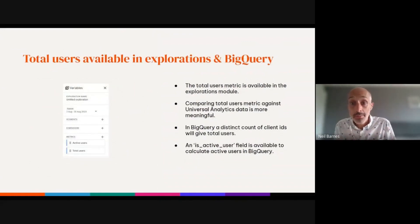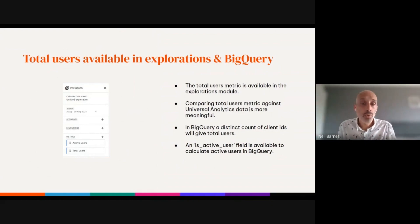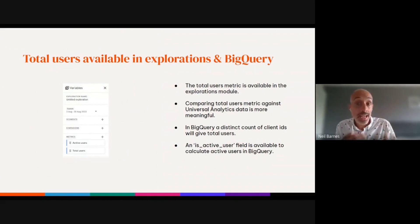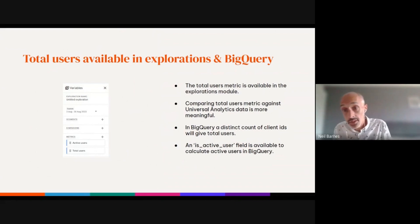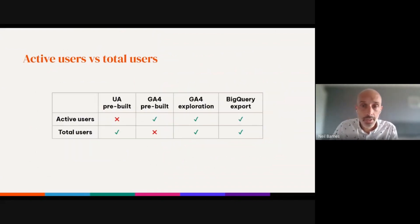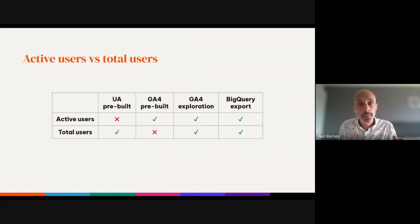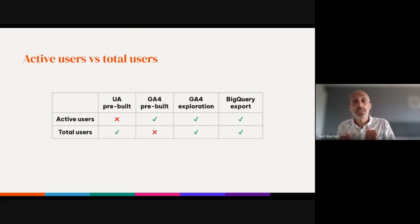Total users are available in Google Analytics 4 — it's just a case of knowing where to find them. Total users is available in the Explorations module as a separate metric to active users. Within the BigQuery raw data export, a distinct count of the user's pseudo-ID gives a calculation representing total users. So comparing total users in Google Analytics 4 against total users in Universal Analytics is a more meaningful comparison. In Universal Analytics there was no active users metric; GA4 pre-built reports have active but not total — but Explorations and BigQuery give the flexibility to do both.